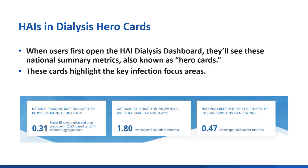The two other event types, IVAS and PRS, do not have a SIR, and the reporting is in rates — the number of events per 100 patient months. When one navigates to the page, the first section encountered is what the developers call the HERO cards. HERO cards report the BSI SIR, IVAS rate, and PRS rate.